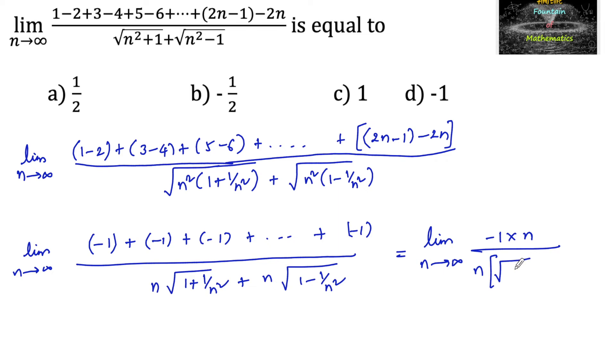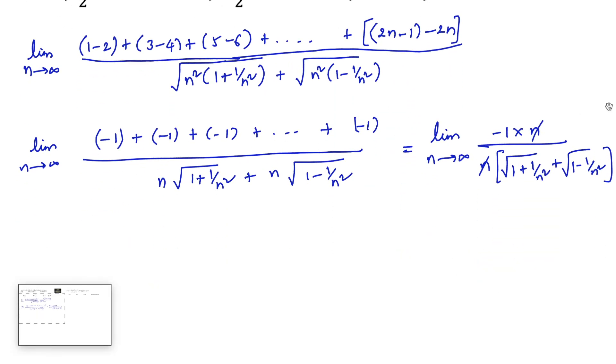Taking n common from the denominator gives n times (root of (1 plus 1 upon n squared) plus root of (1 minus 1 upon n squared)). The n in the numerator and the n in the denominator cancel, simplifying the expression.